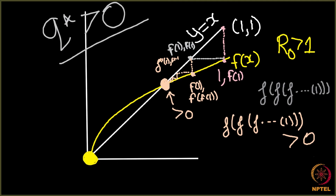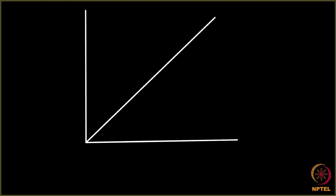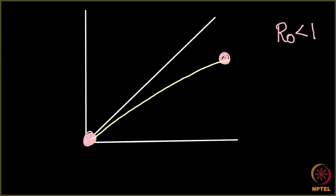We are done with the first part — what happens when R0 is greater than 1. Now, what happens when R0 is less than 1? It is entirely the same procedure. So again, here was our curve and here was the line y equals x. One point of our plot was here and another point was here. If R0 is less than 1, how will my curve look? It will go something like this.